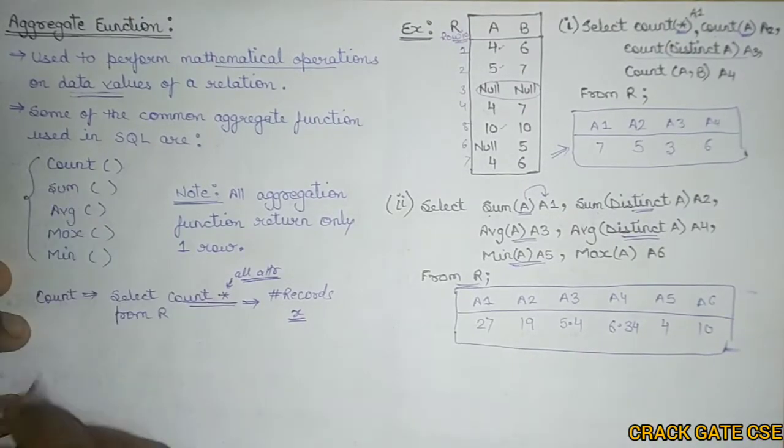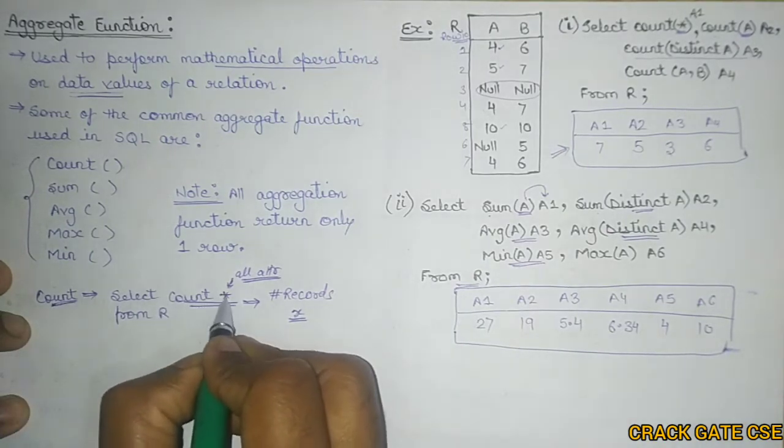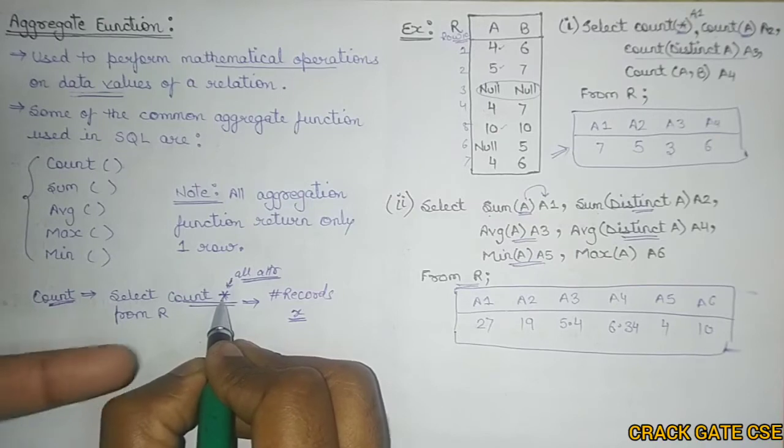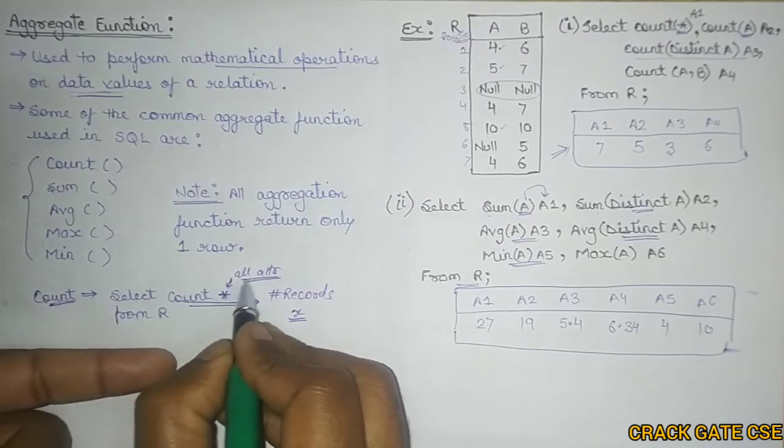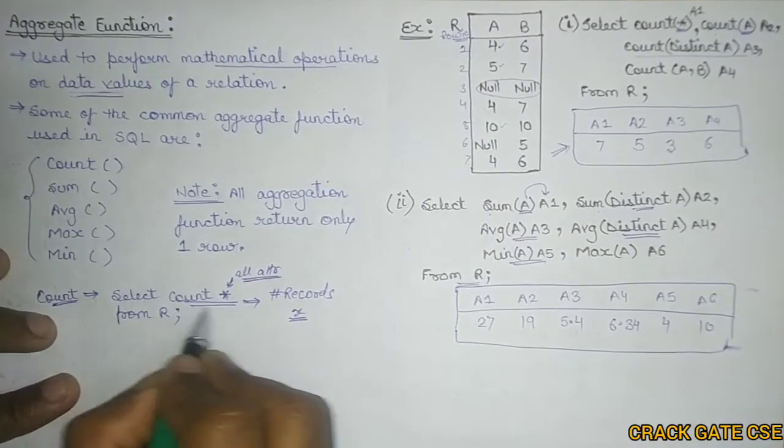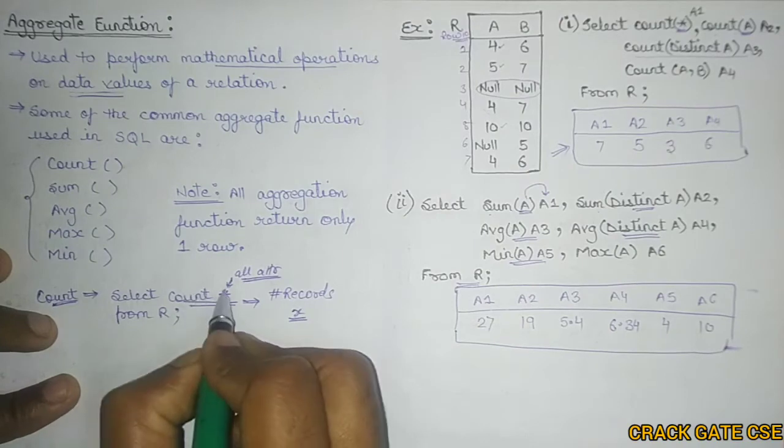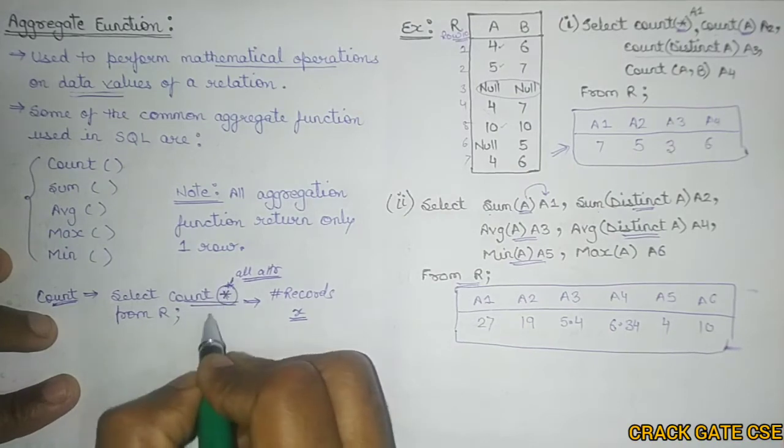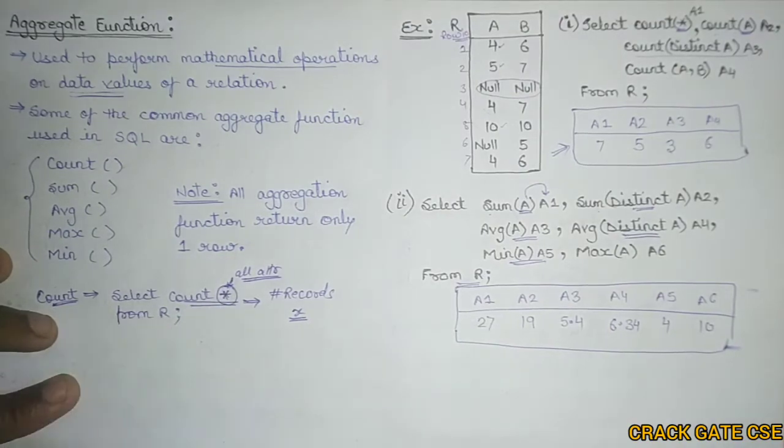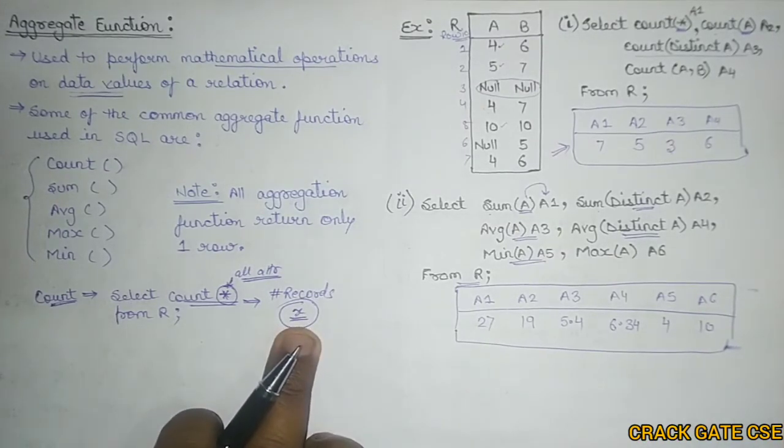For example, if I talk about count, I can write select count star. There can be any attribute name instead of star. So as I want to select all the attributes, that's why I'm using star here. So this query, select count star from R, will count the number of records in R and give you the respective values. You can see that there is only one row. Now let's try to understand these aggregate functions with the help of some examples.